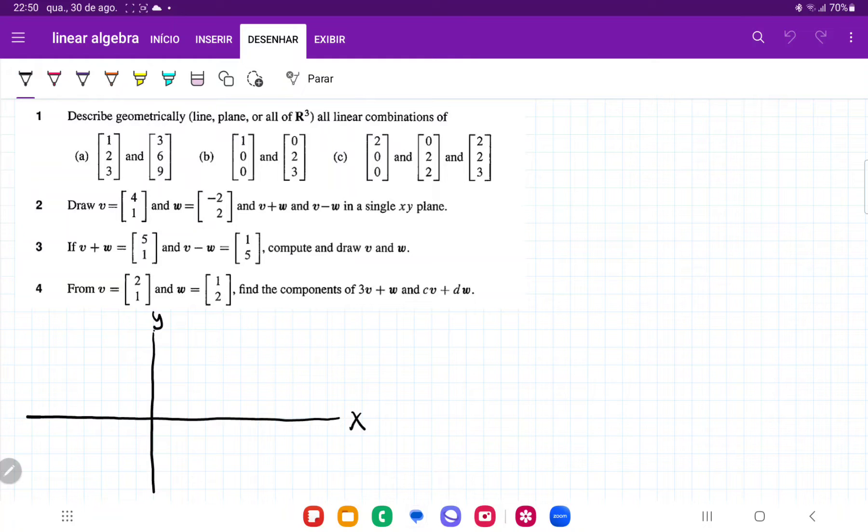So let's put that in. If v is equal to, let's call this a1 and then a2, and w is going to be b1, b2, we have that v plus w is going to be equal to a1 plus b1 and a2 plus b2.